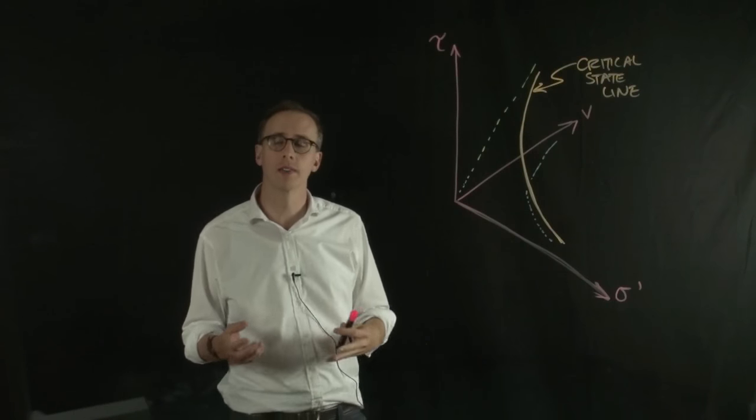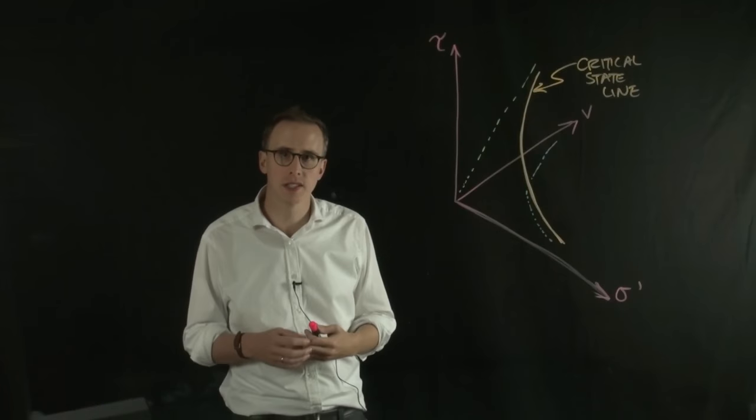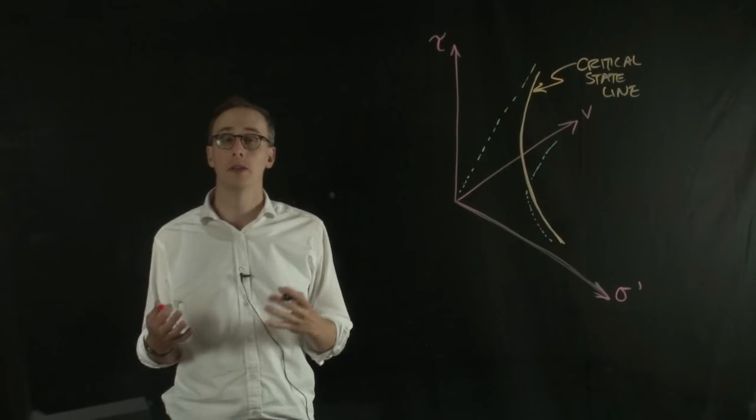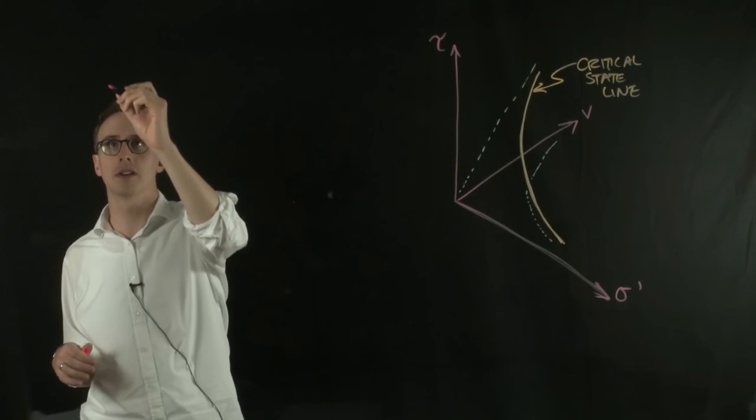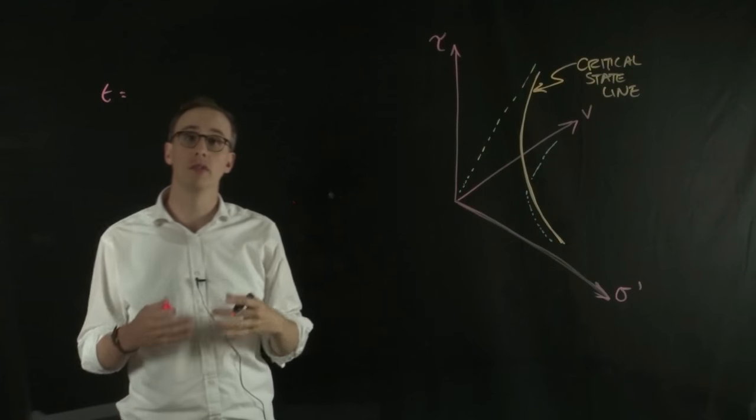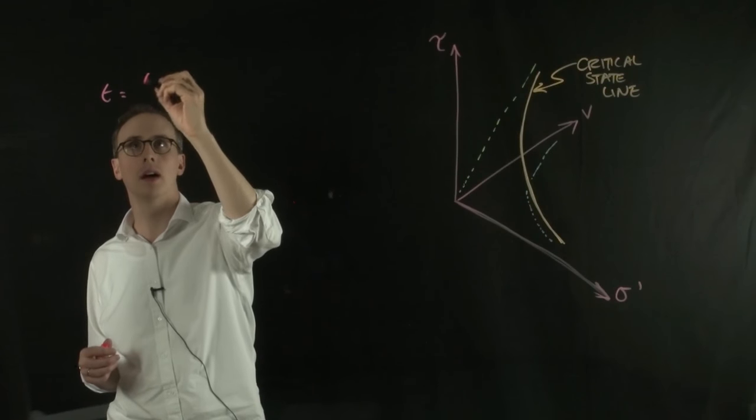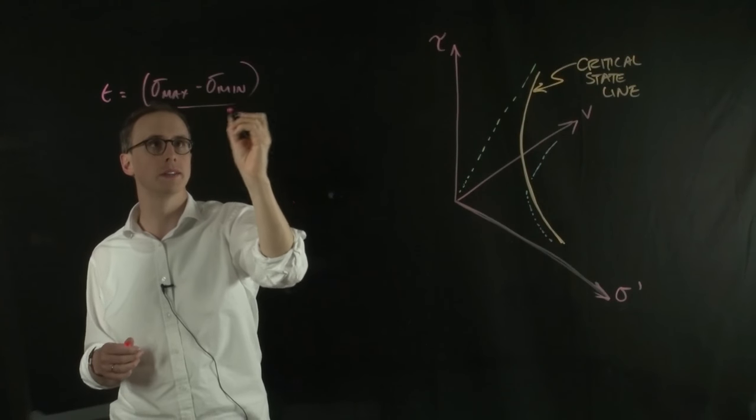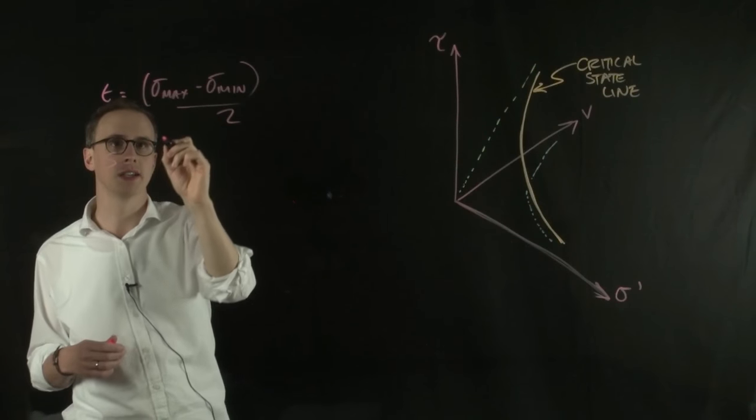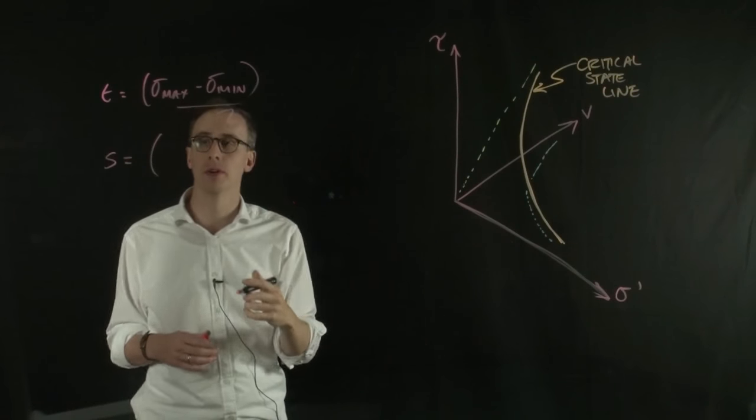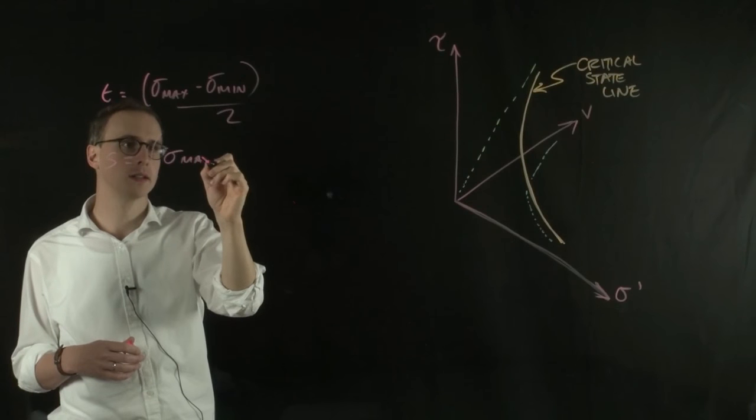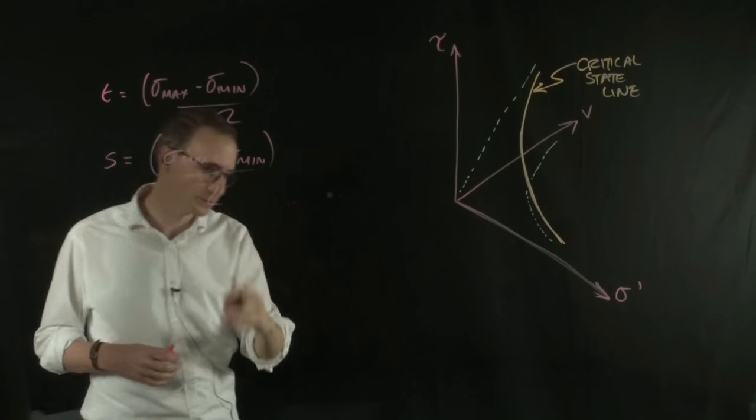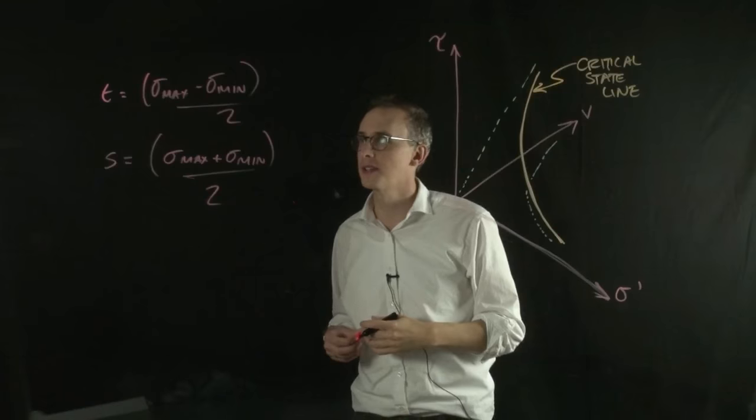So what usually happens is instead of expressing the information like this, the information is expressed in terms of stress invariants. So if you remember that you have two dimensional stress invariants, you have T, which is the radius of that Mohr's circle, so you have sigma max minus sigma min divided by 2, and you also have S, which is the center point of the circle, which is sigma max plus sigma min divided by 2, or the average stress.